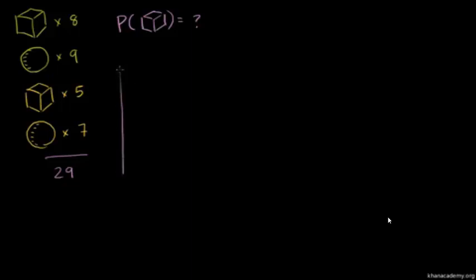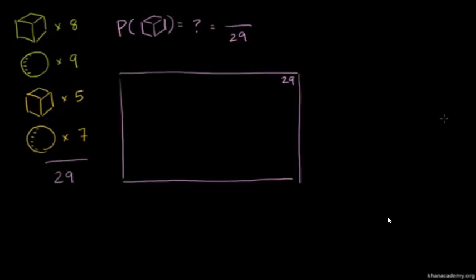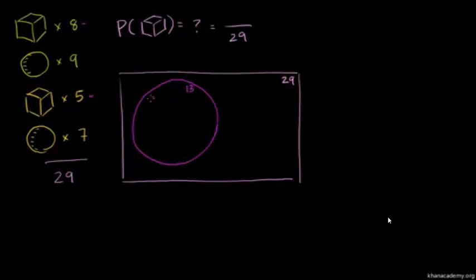Let's draw all of the possible objects as a big area — these are all 29 possible equally likely outcomes of the experiment. How many meet our constraint of being a cube? I have 8 green cubes and 5 yellow cubes, so there are 13 cubes total. The probability of getting a cube is 13 over 29, the number of cubes over all possible equally likely events including the spheres.